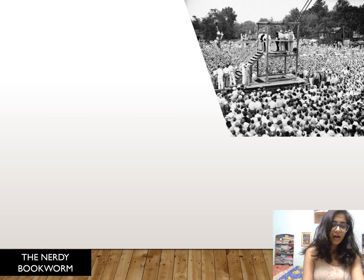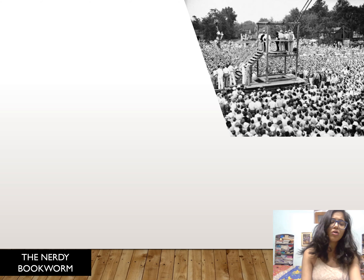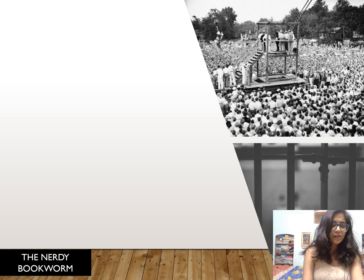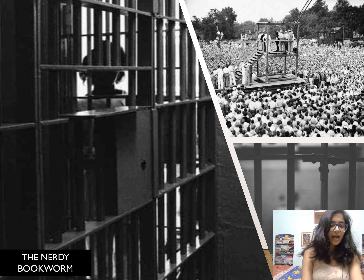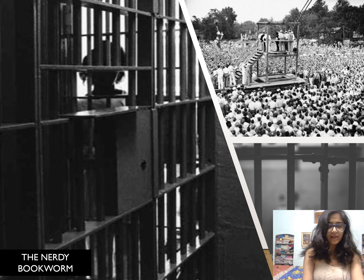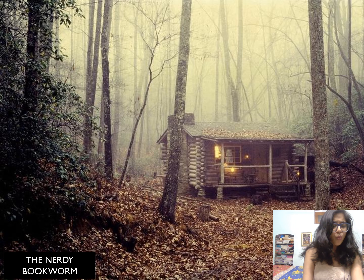However, in the crowd, Hester recognizes her long-lost husband, Roger Chillingworth. She is sent back to prison for not revealing her lover's identity. Chillingworth visits Hester in prison and forces her to promise never to reveal his true identity as her husband. He also vows to find and destroy the life of her lover.